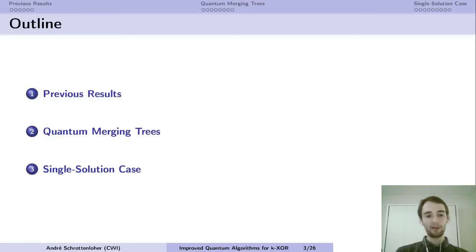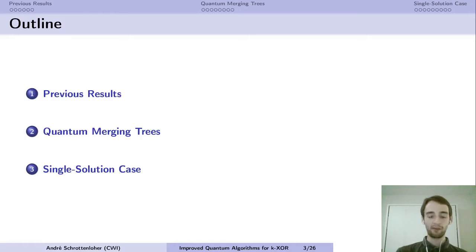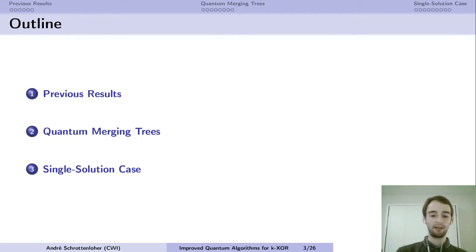I will first present the principle of classical algorithms and some previous results in the classical and quantum setting on how to solve this problem. Then I will present the idea of quantum algorithms using merging trees, before we get to the single solution case, where there are improvements from this paper.